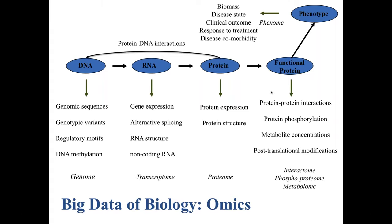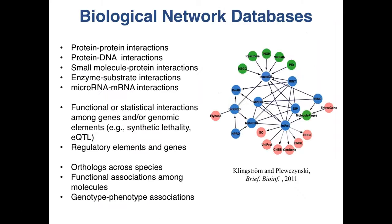It's important to note that most of this data can be represented, or naturally comes, in the form of networks. There are lots of biological network databases out there. These networks contain different types of information in terms of interactions and associations between biomolecules and other biological entities. Protein-protein interactions are one form of network data where you have information on the physical binding of different proteins, obtained through high-throughput experiments or predicted using computational tools.